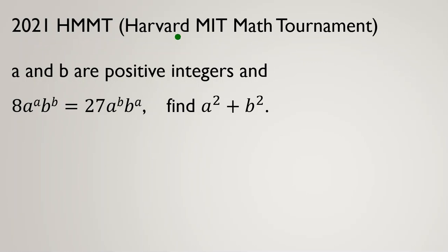2021 HMMT Harvard-MIT Math Tournament problem: a and b are positive integers and 8 times a to the a times b to the b equals 27 times a to the b times b to the a. Find a squared plus b squared.